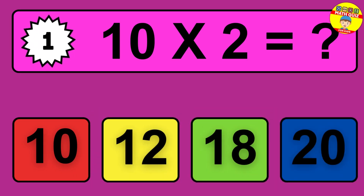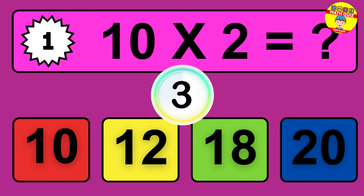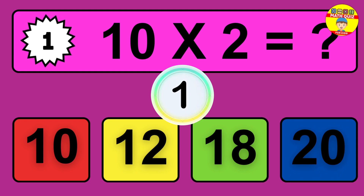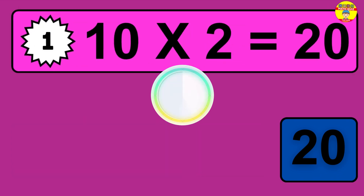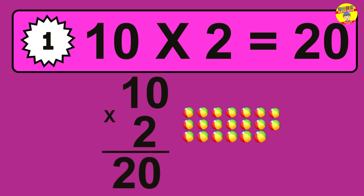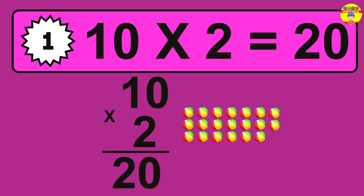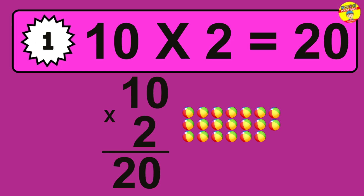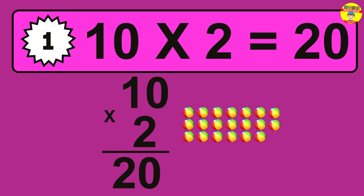Question one: 10 times 2 equals what? The answer is 10 times 2 is 20. To calculate, we have 10 groups with 2 balls each. So how many balls do we have? 20 balls.